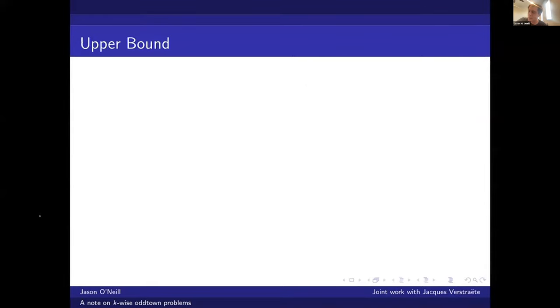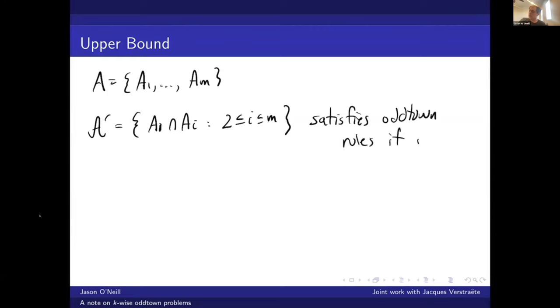So n to the 1 half is a lower bound here, and the upper bound comes from the following observation. So I'll call my sets a1 up to am, and I'm going to define a new family a prime to be all of the intersections A1 intersect ai, where i is between 2 and m, and this family satisfies oddtown rules. So if a is in the form of the problem, the upper bound is then technically n plus 1. So this is upper bound n plus 1, lower bound n to the 1 half. I'm not sure what the answer is. So that's kind of what's playing a role. But yeah, thanks for listening.